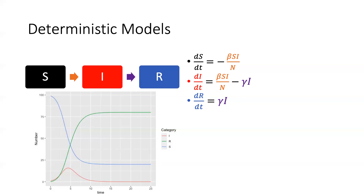For DI over DT, we start by introducing all of the newly infected, but we also have an arrow going out — a negative — and that arrow is recovery. We have gamma, which is generally called the recovery rate, assuming exponential recovery. This is the rate of recovery from an infection, and we need to multiply it by I because we multiply by the number of people who are actually infectious right now.